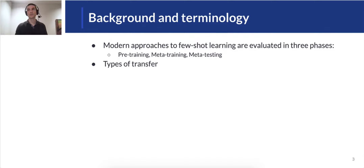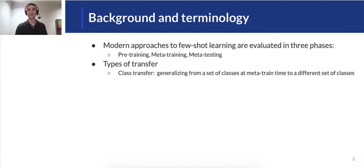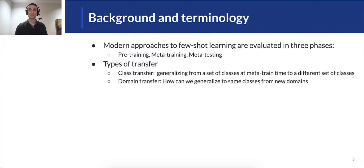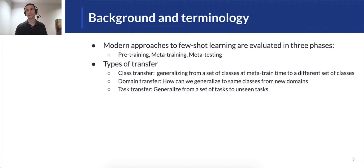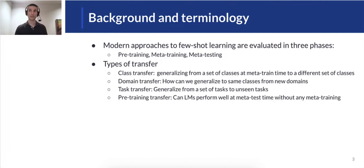There are a few types of transfer one might be interested in evaluating during meta-testing. The first type is class transfer: can you generalize to a new set of classes not seen at meta-training time? There's also domain transfer: can we generalize to the same classes but from new domains? There's task transfer: can we generalize to a new set of tasks during meta-testing? And pre-training transfer: can we not perform meta-training but still do well at meta-testing time?